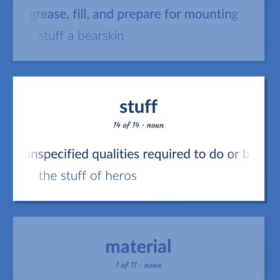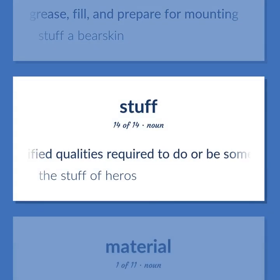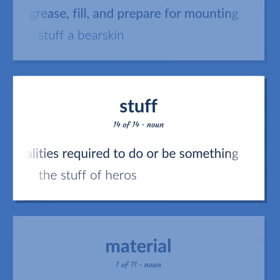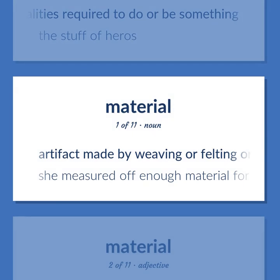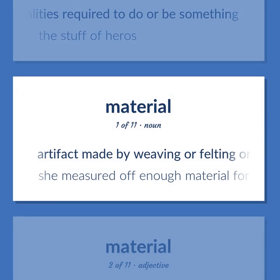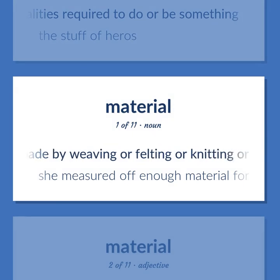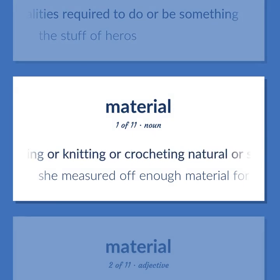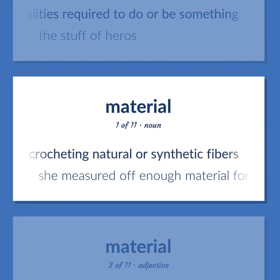Stuff (noun): Unspecified qualities required to do or be something. Example: The stuff of heroes. Material (noun): Artifact made by weaving or felting or knitting or crocheting natural or synthetic fibers. Example: She measured off enough material for a dress.